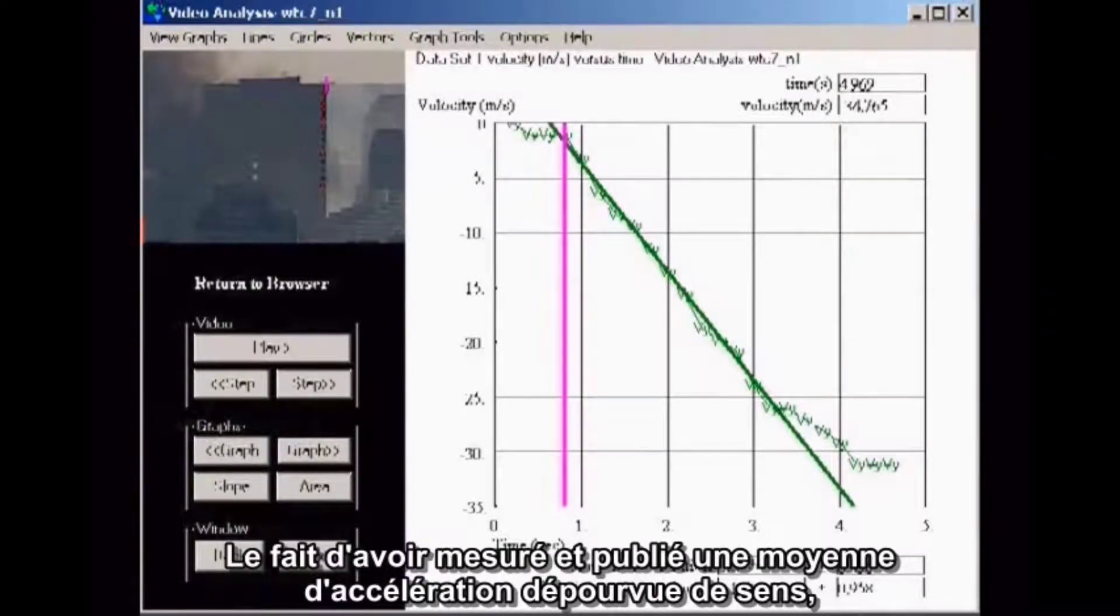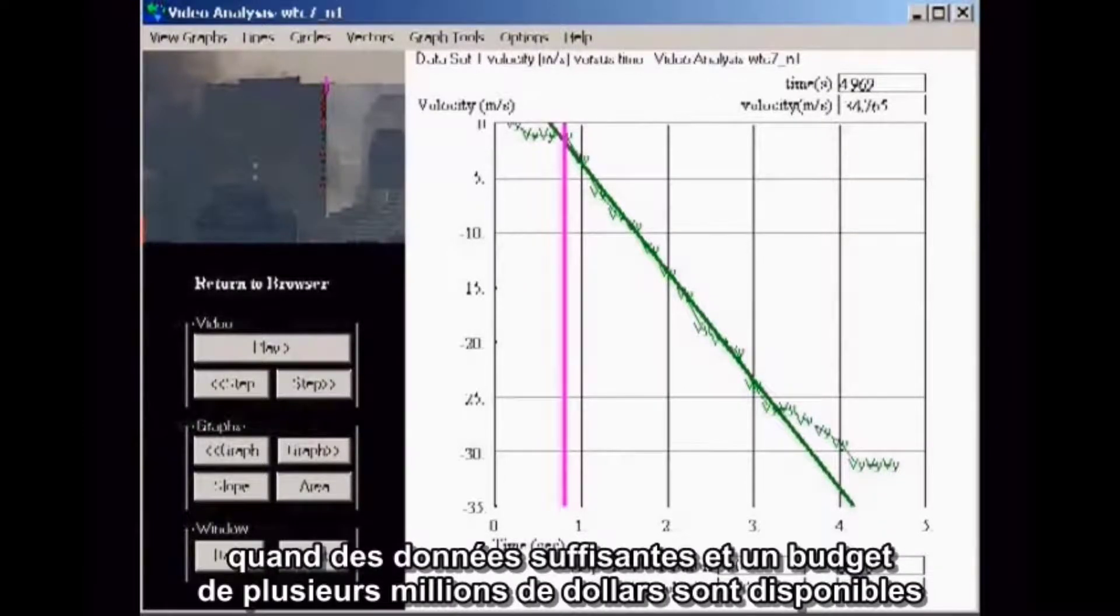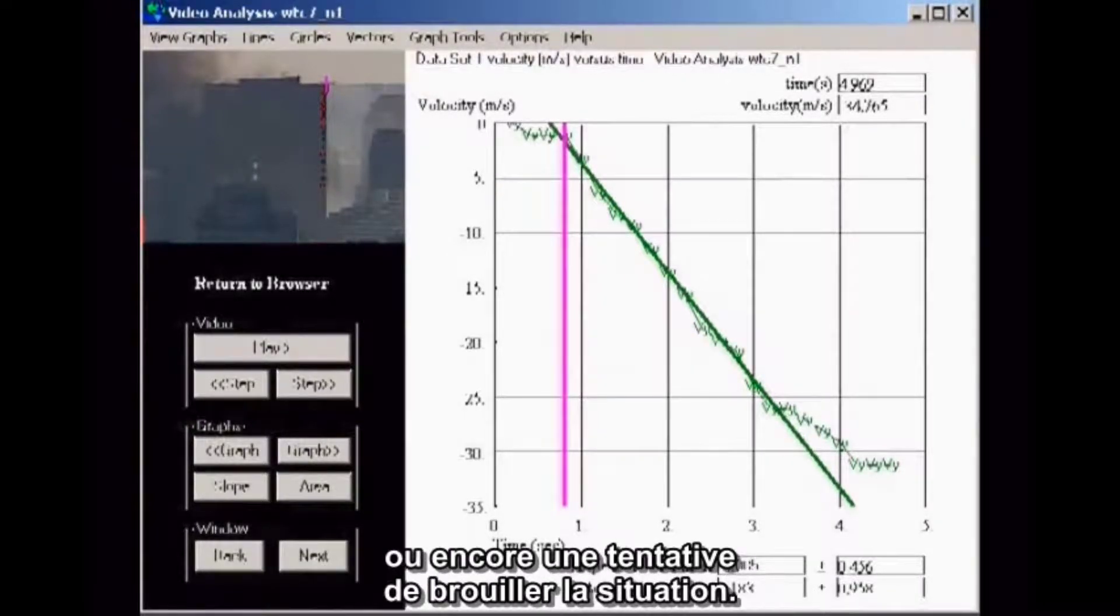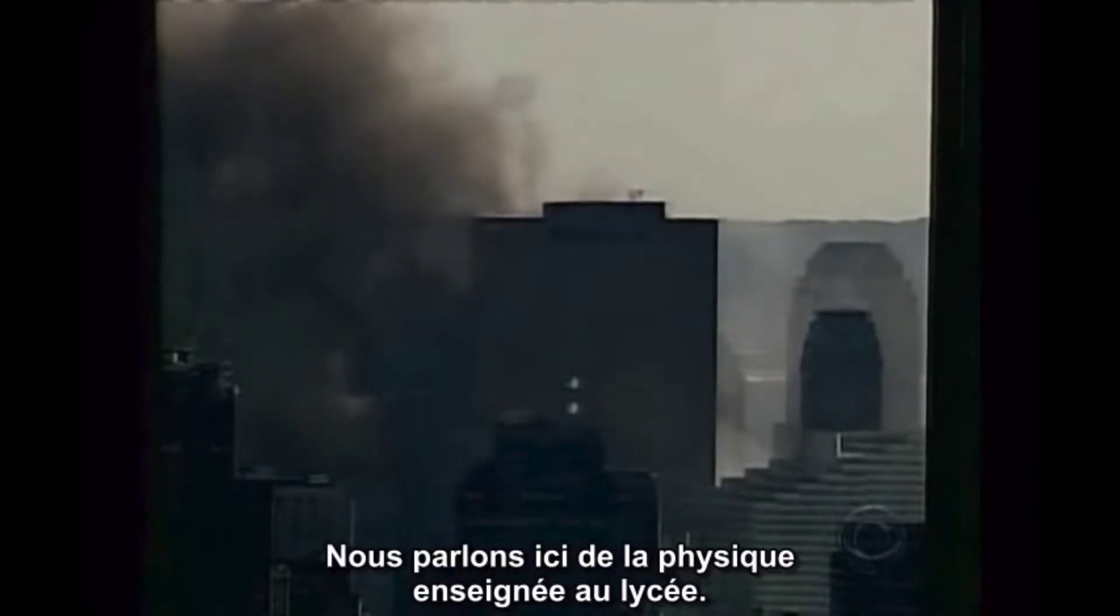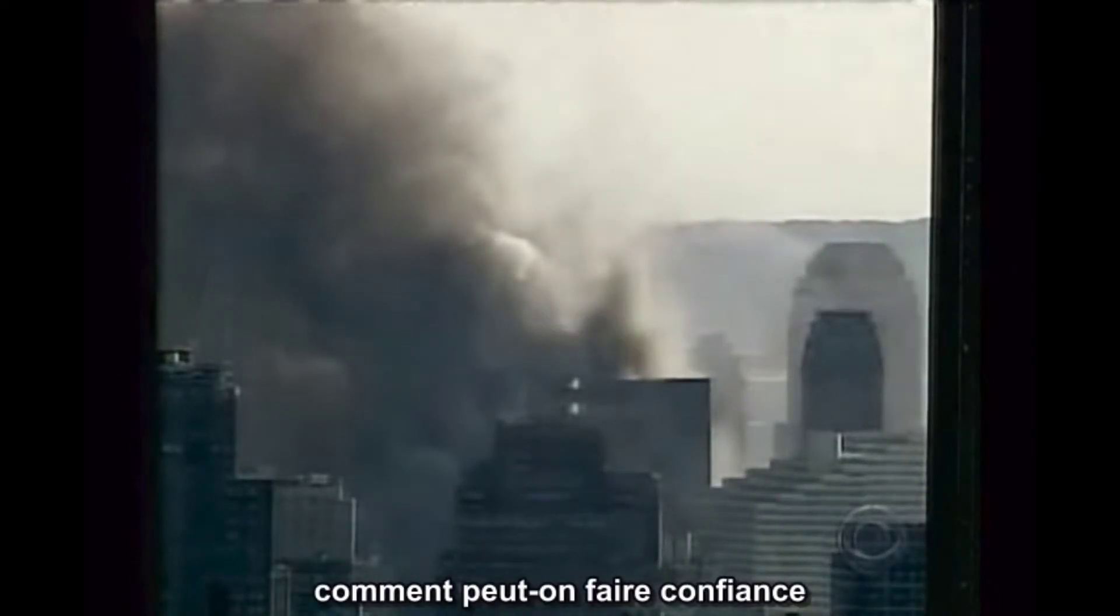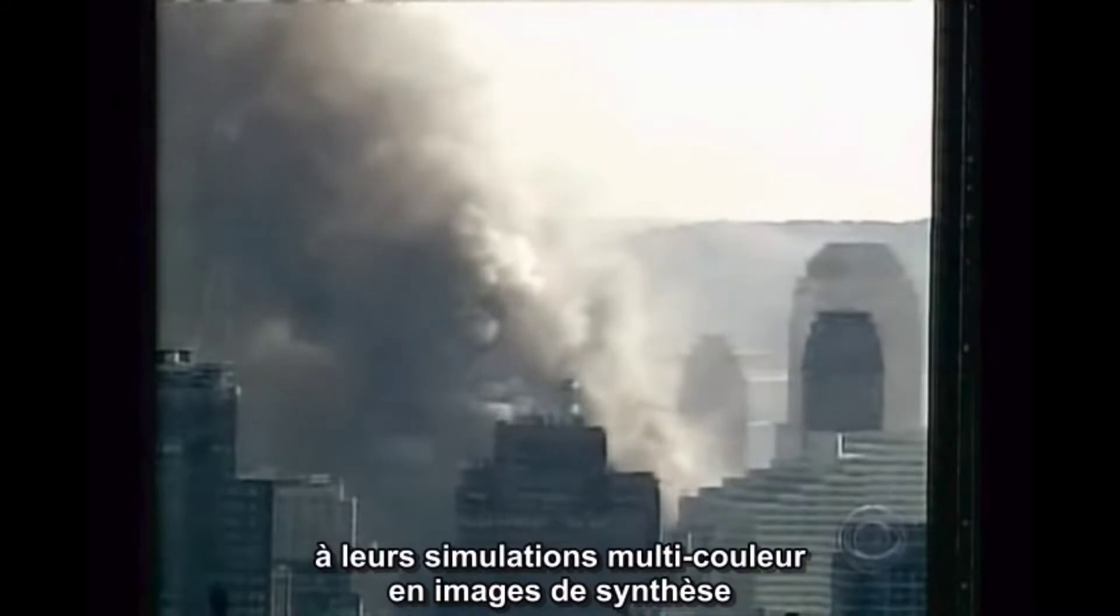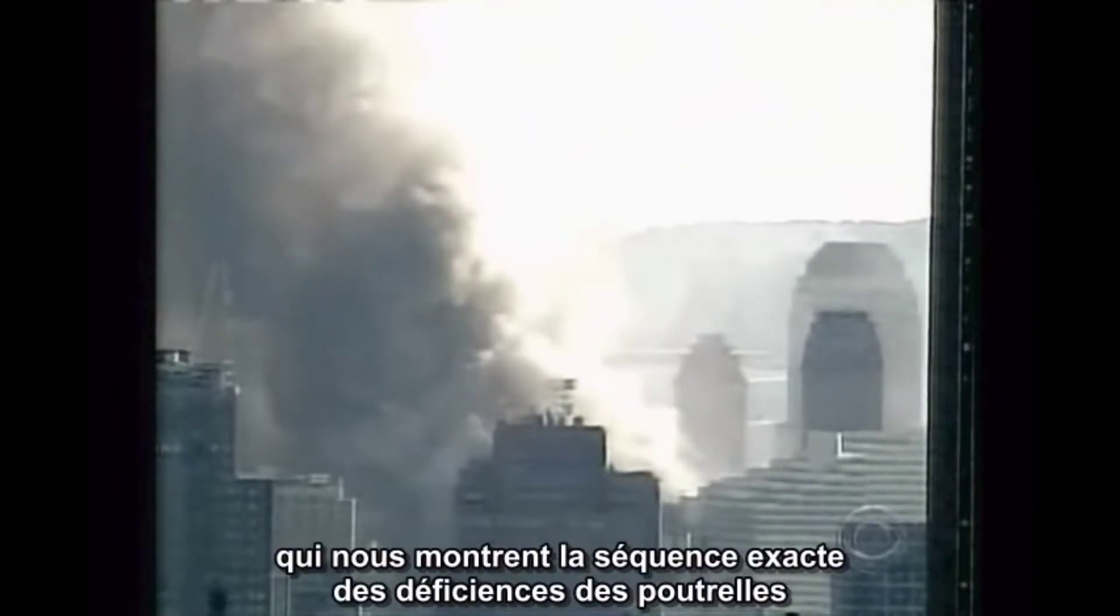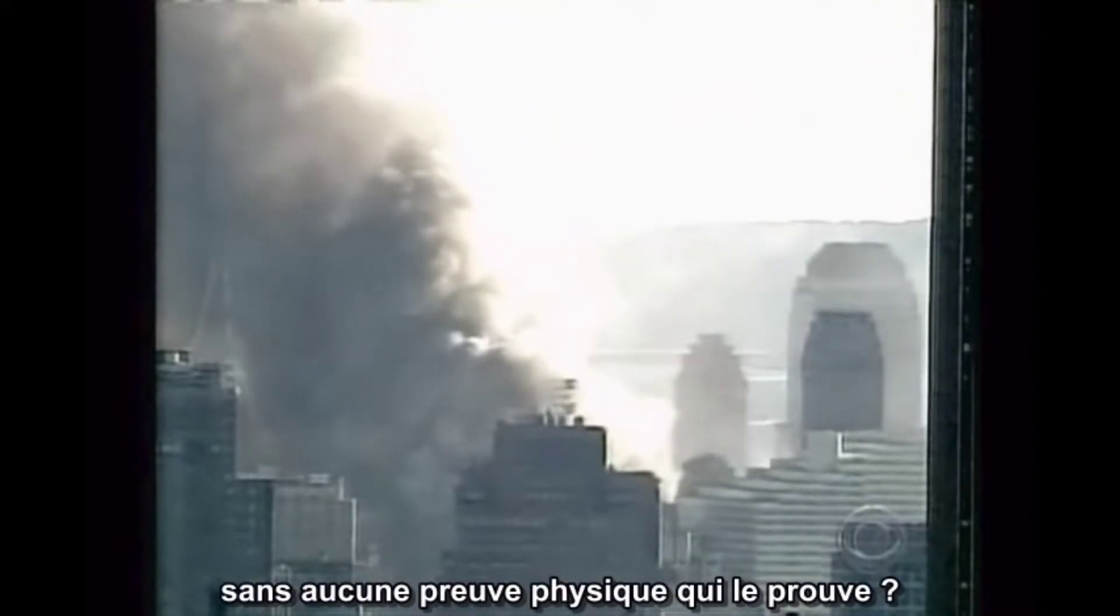To measure and publish a meaningless average acceleration, when sufficient data in a multi-million dollar budget are available to measure the actual velocity profile, constitutes either gross incompetence or an attempt to obfuscate the issue. This is high school physics we are talking about. If they can't get the high school physics right, what confidence can we have in their multicolored, computer-animated, whiz-bang simulations that tell us the exact sequence of girder failures without any physical evidence for any of it?